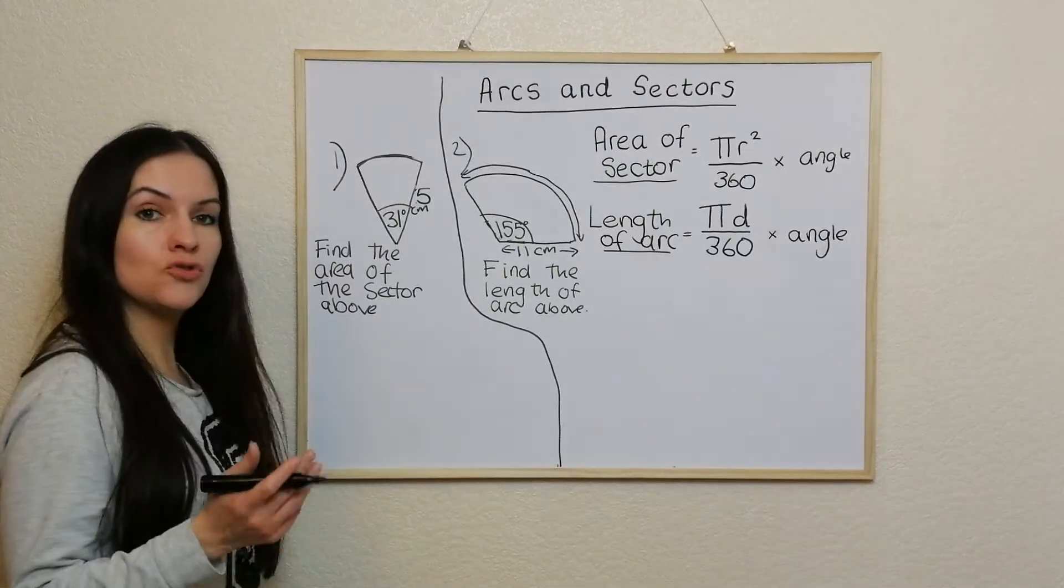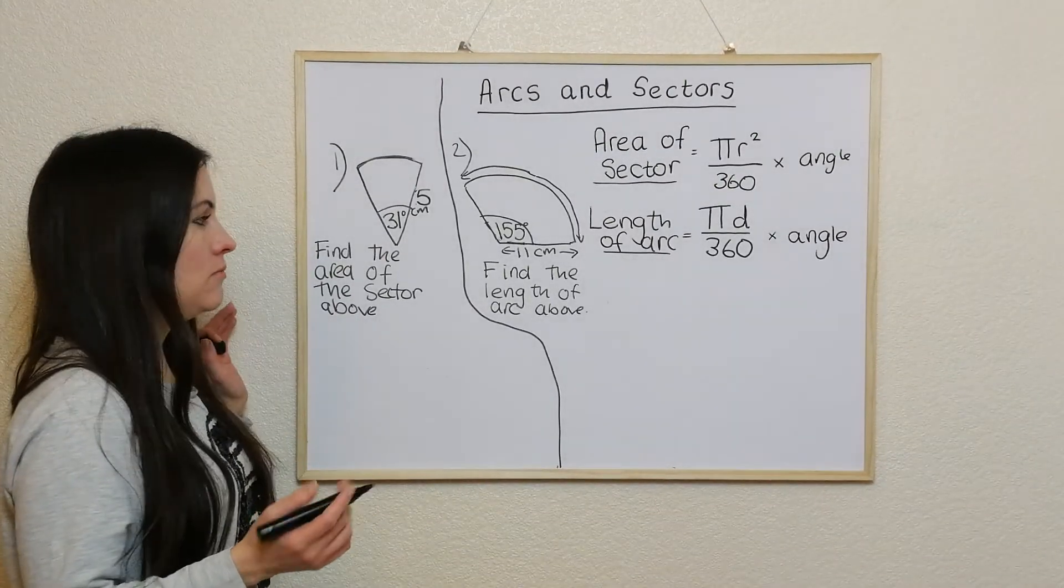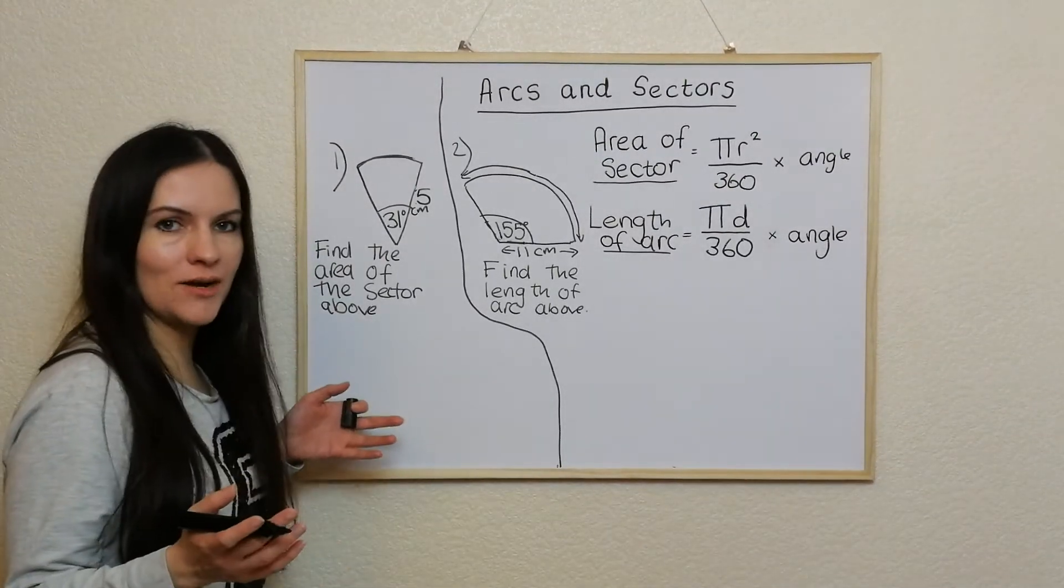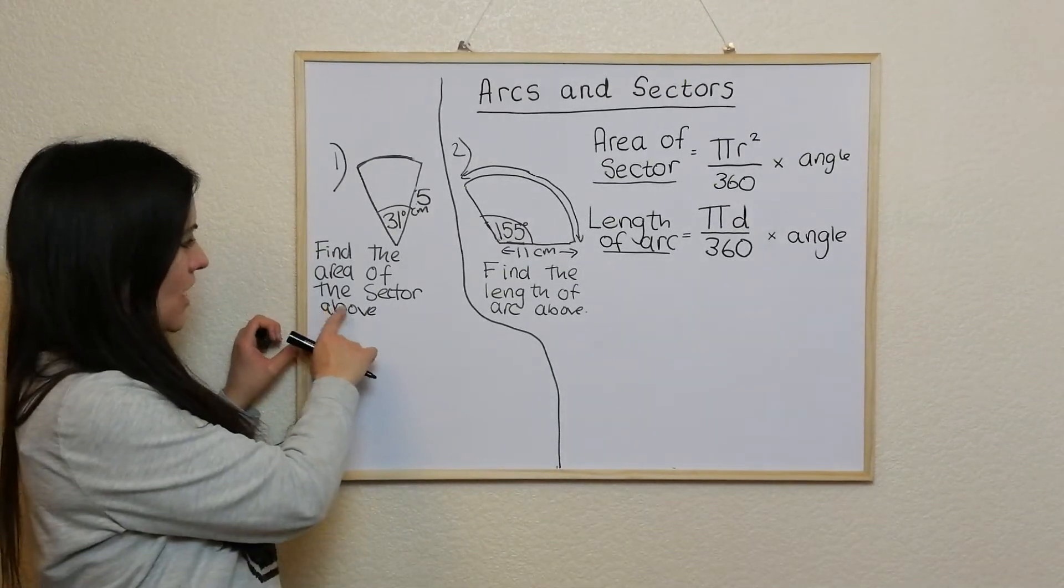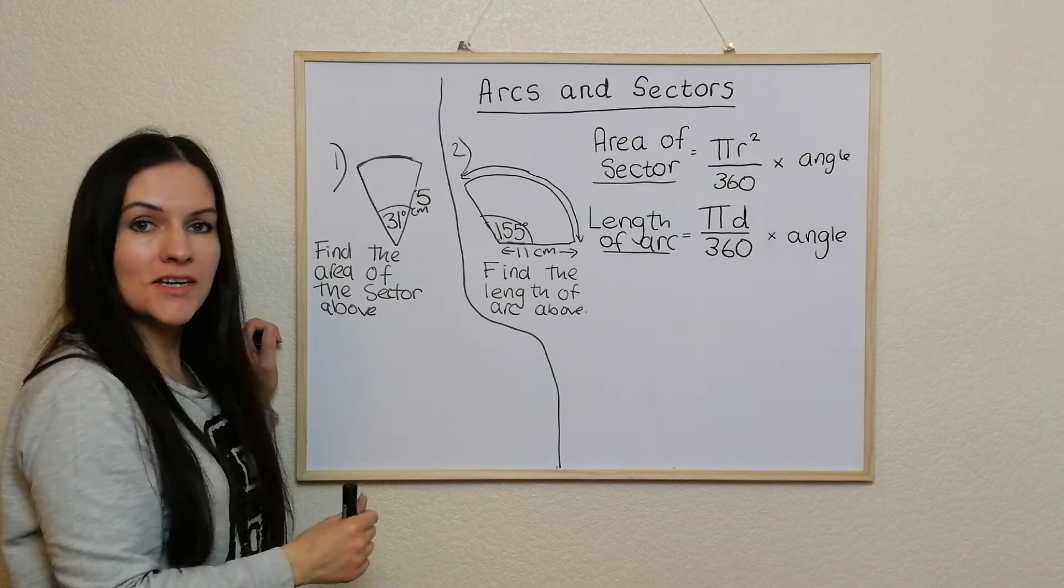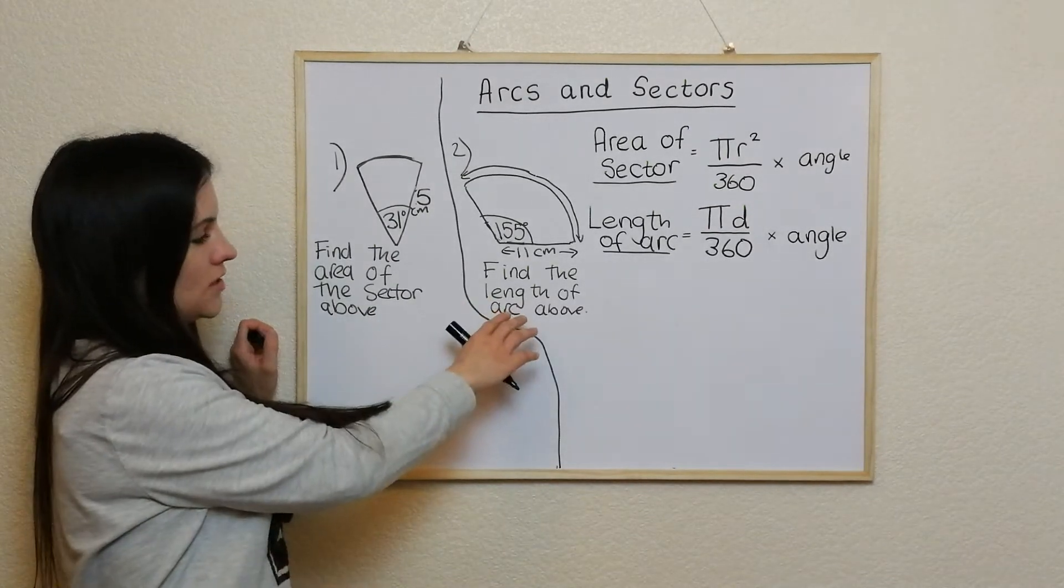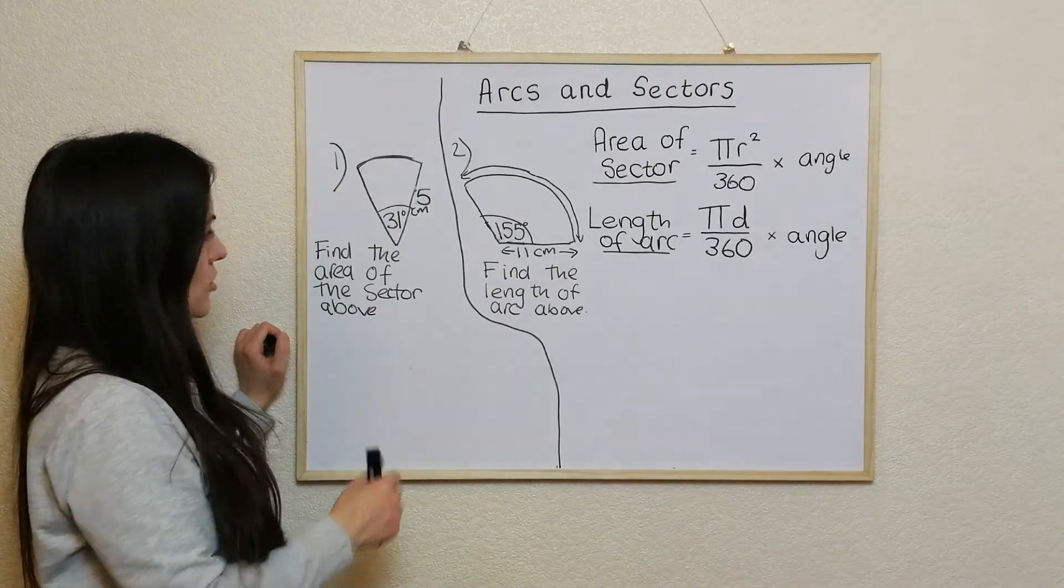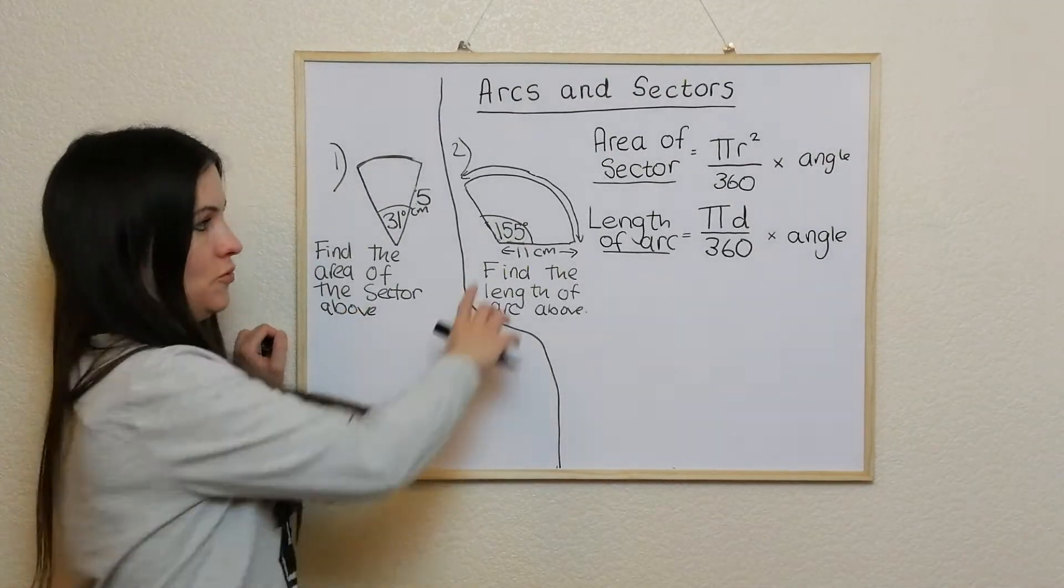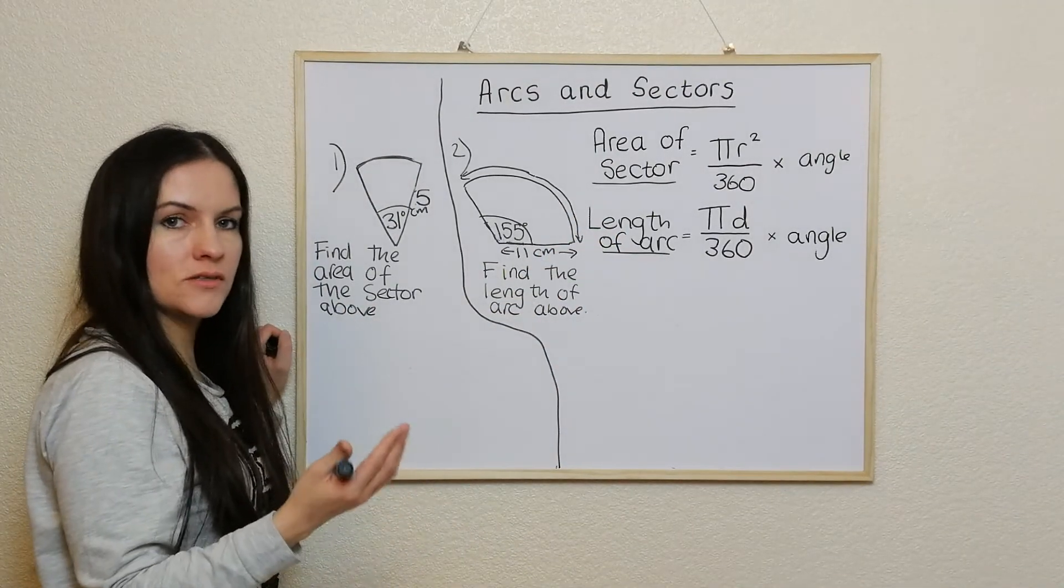Okay, so what we've got here is we've got two examples. Now these are probably the easier examples, shall we say. We've got one here where it asks us to find the area of the sector above, and we've got one here when it asks us to find the length of the arc above. So we'll talk through quickly what we said before, but we'll use the formulas because the formulas is the best way.